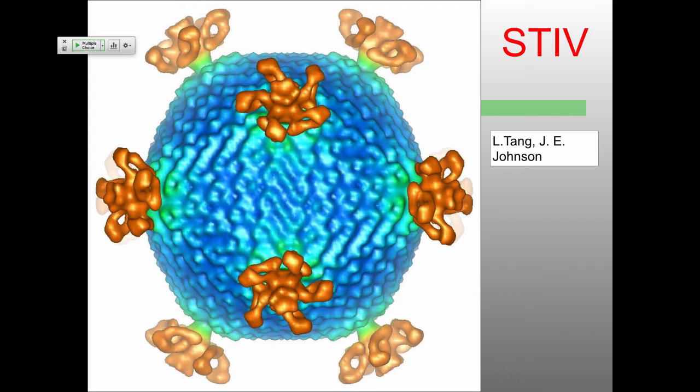I discovered this virus when I was looking for lemon-shaped viruses under a microscope during my postdoc in Bozeman, Montana. We discovered this new virus — it's got icosahedral symmetry, so it's easy to put in the cryo-electron microscope, do averaging, and get this beautiful structure. This was all done by Jack Johnson of the Scripps Research Institute with his postdoc Liang Tang.